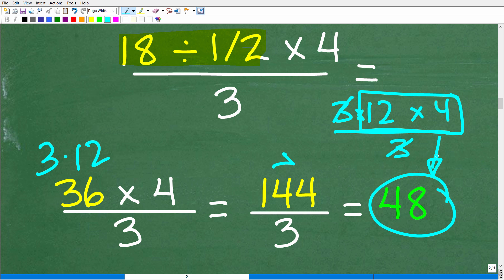So either way is fine whether you took this 36 and multiplied by 4 and got 144 and then divided it by 3, or if you took that 3, divided it into 36, had 12, multiplied by 4. The correct answer is 48.